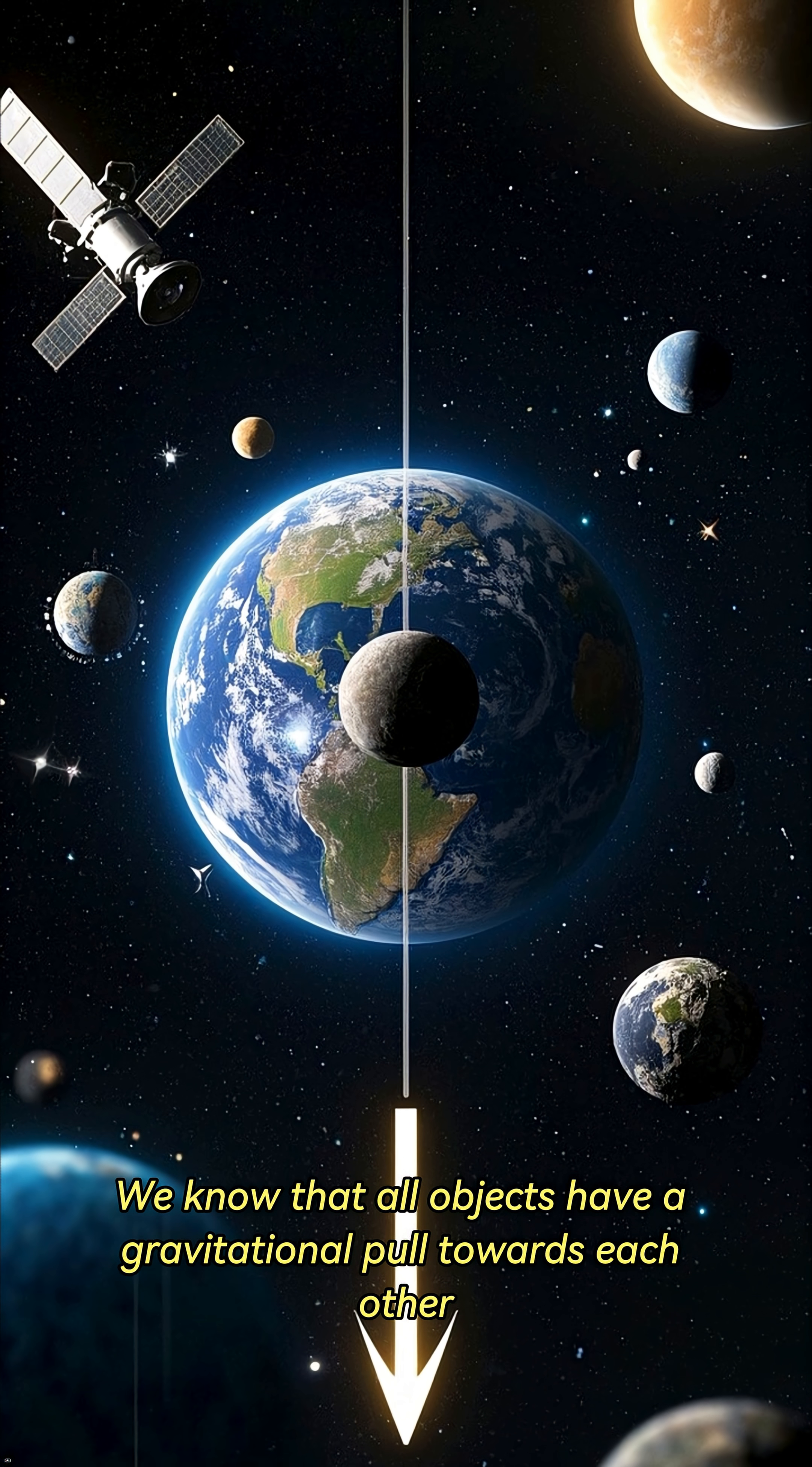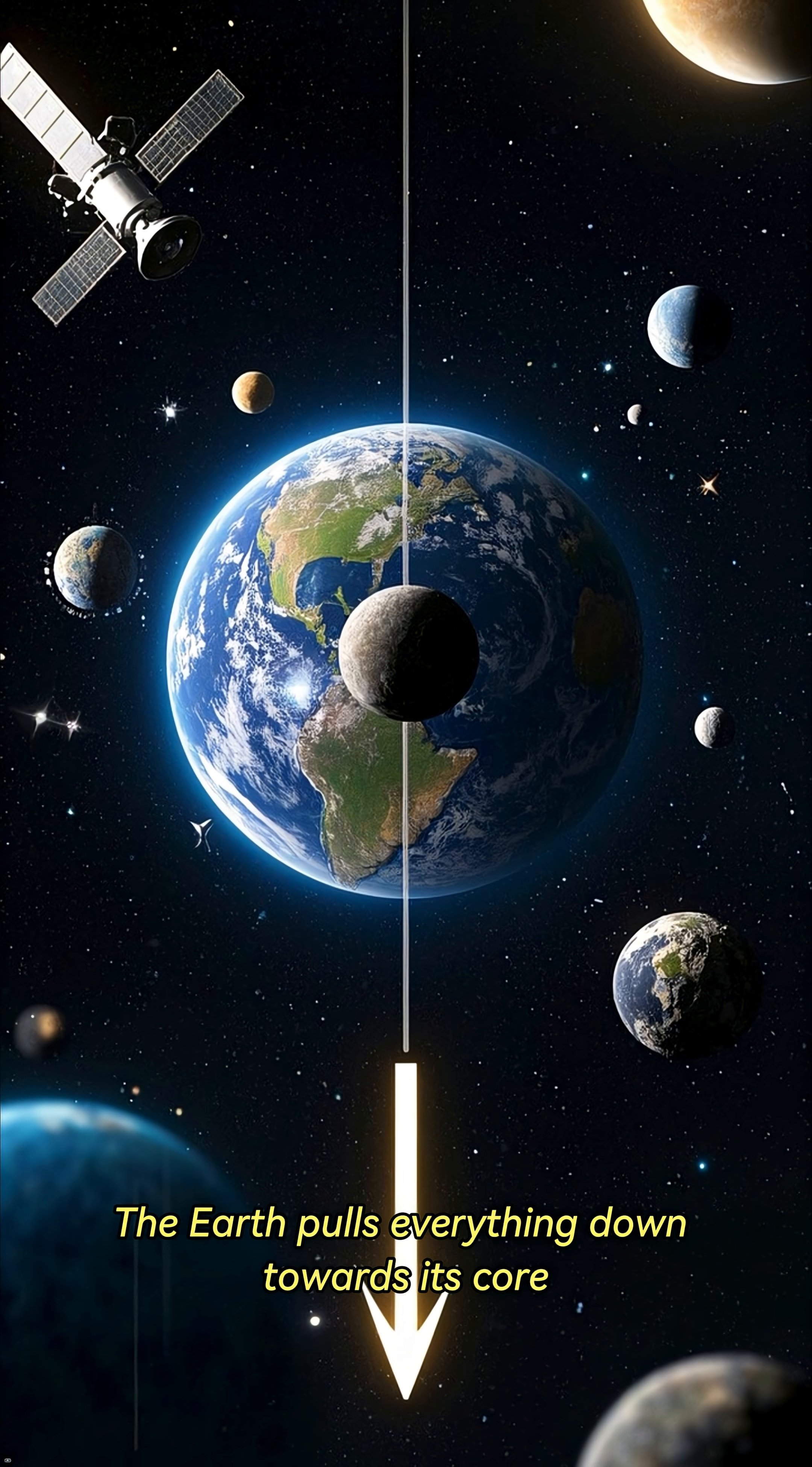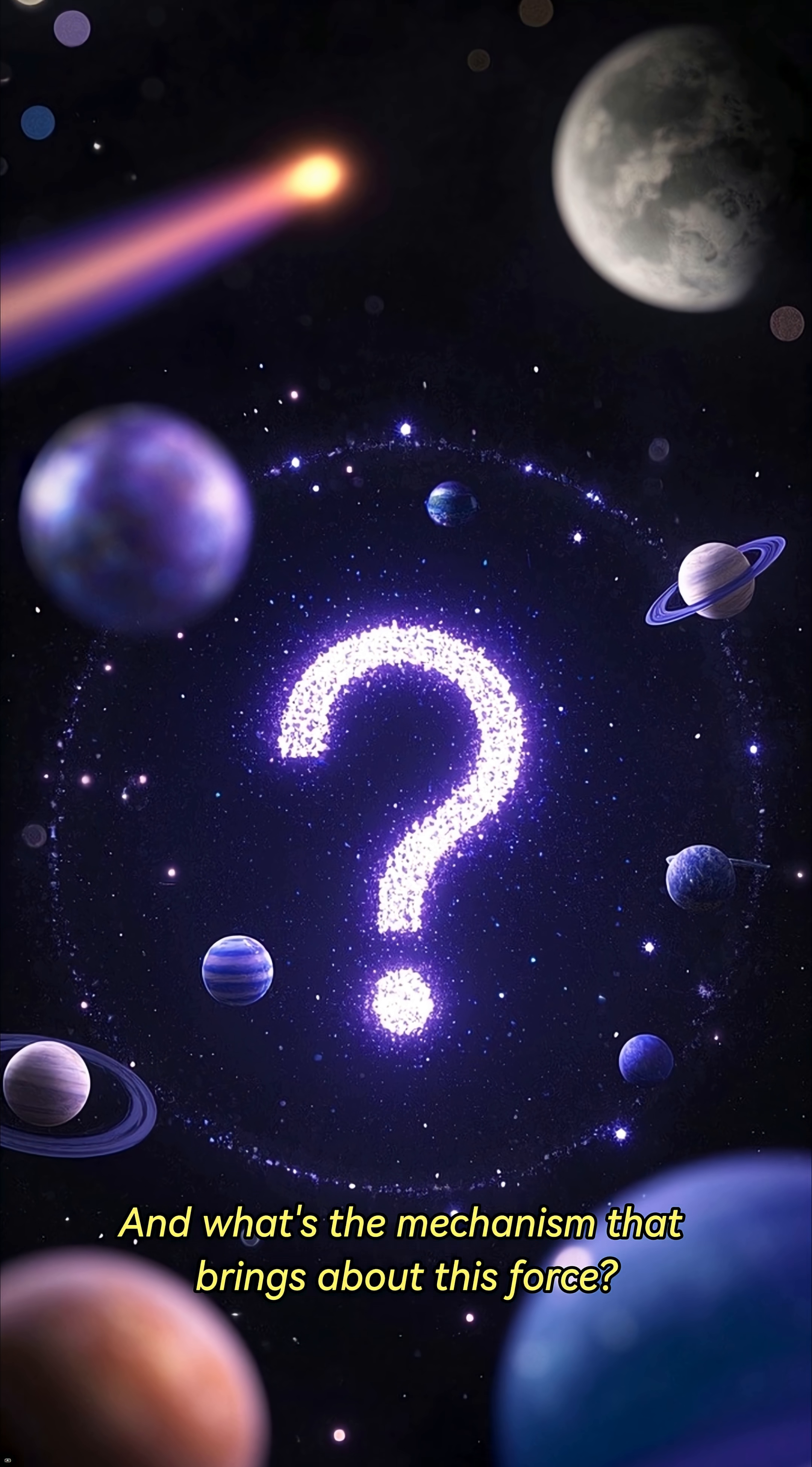We know that all objects have a gravitational pull towards each other. The Earth pulls everything down towards its core, but why do they pull towards each other? And what's the mechanism that brings about this force?